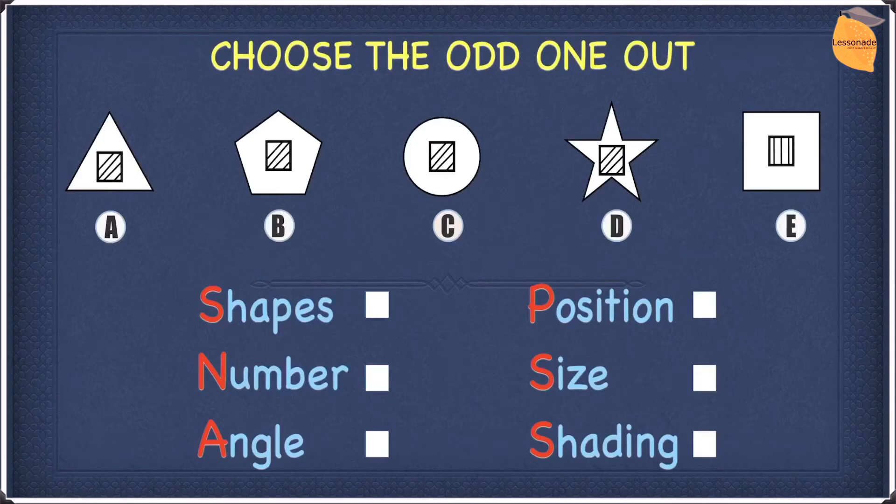Let's look at this example and let's use SNAPS to get our answer. The first thing we have is shapes. So all of the options above, they have different shapes, which means shape does not work. So we can cross it off. Let's move on to numbers. All of the options above, they have two shapes, a smaller shape in the middle and a larger shape outside. So this means number doesn't work either.